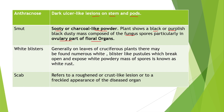Next disease is white blisters: generally on leaves of cruciferous plants, numerous white blister-like pustules are found which break open and expose a white powdery mass of spores, known as white rust. This disease commonly occurs in cruciferous plants like cauliflower and cabbage, where blisters appear on the plant surface and burst to release white powdery mass.